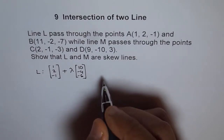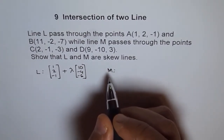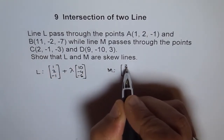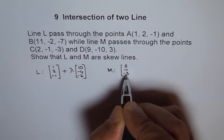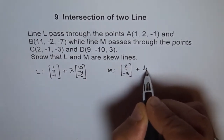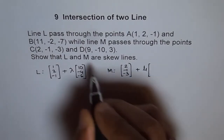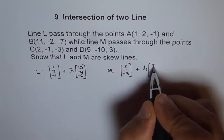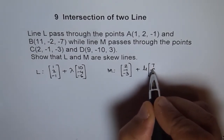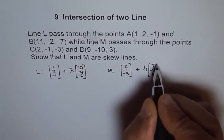Line M will use point C(2, -1, -3) and parameter mu, with direction vector D minus C: 9 minus 2 is 7, minus 10 minus of minus 1 is minus 9, and 3 minus of minus 3 gives us 6.